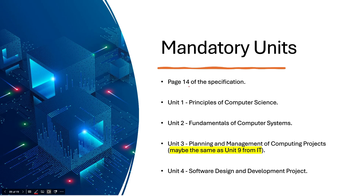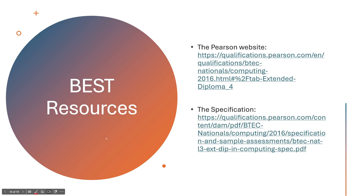This information is on page 14 of the specification. We have Unit 1: Principles of Computer Science; Unit 2: Fundamentals of Computer Systems; Unit 3: Planning and Management of Computing Projects — which might be similar to Unit 9 from BTEC Level 3 IT; and Unit 4: Software Design and Development Project. When it comes to resources, your best resources are going to be the Pearson website — link will be in the description — and the specification, also in the description.